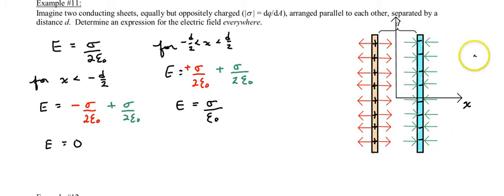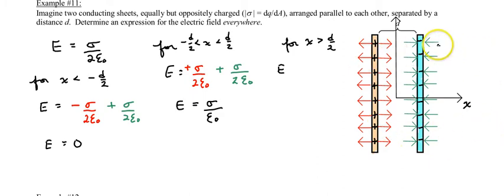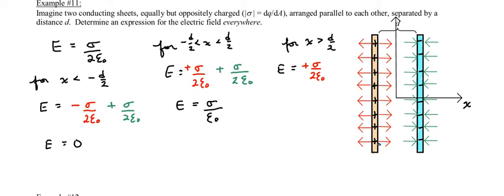Lastly, let's look at the region to the right of the negative plate, for x greater than d over 2. Here you'll see the electric field of the positive plate is going to the right, right into this area, yet the field from the negative plate is going to the left. So we have positive sigma over 2 epsilon naught from the left positively charged plate, and then negative sigma over 2 epsilon naught from the negative plate pointing inwards to the left. This results in a zero electric field on the right side of this plate. And between the two plates, the electric field is equal to sigma over epsilon naught.